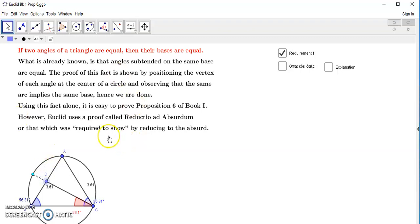So now, using this fact alone, it is easy to prove Proposition 6 of Book 1, but Euclid uses a proof called reductio ad absurdum, or that which is required to show. And in Greek, the phrase for that is oper edi dicse, so that occurs frequently in the elements.